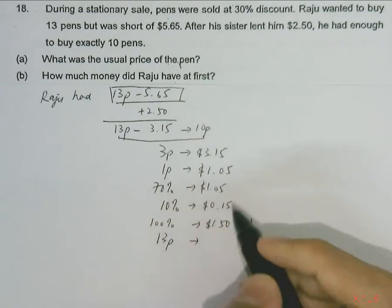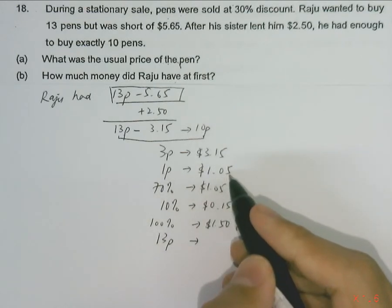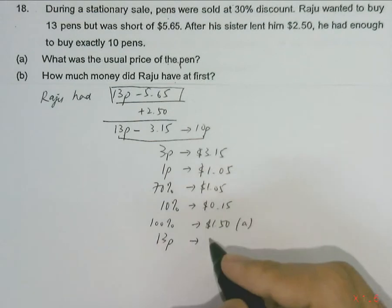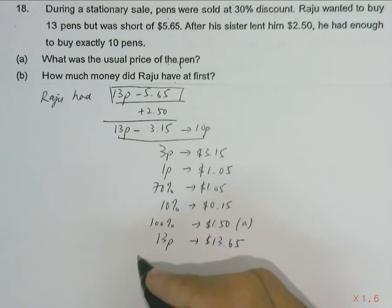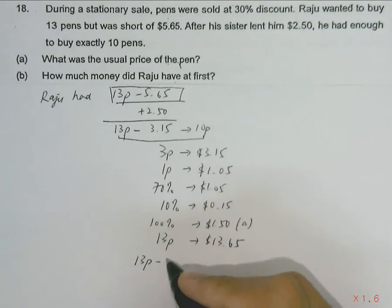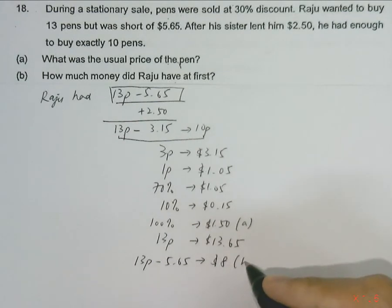we can find 13 pens by multiplying $1.05 by 13. That will give us $13.65. So the amount of money he had, we will be subtracting off $5.65. That will give us $8. This is our answer for part B.